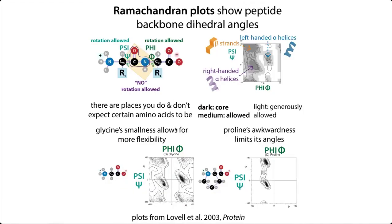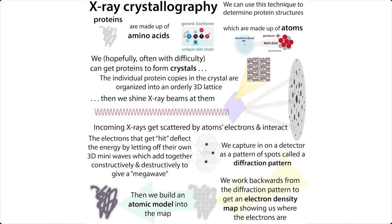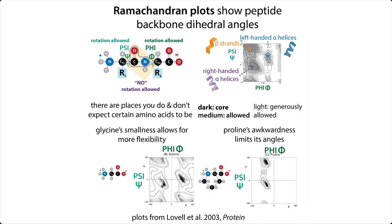If you were to look at the angles — which you can do by using a technique like X-ray crystallography to figure out the atomic structure of a protein, how all those angles are actually arranged — you'd see that glycine takes on angles that are different than the other amino acids. In a Ramachandran plot, which shows those backbone angles — the psi and phi angles, the points on the backbone at which you can actually twist — the angles for glycine are way different than for most other amino acids, because glycine is so flexible.